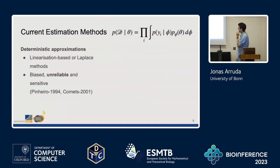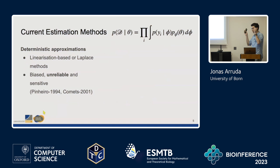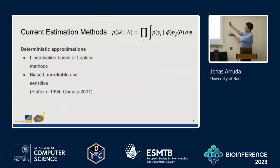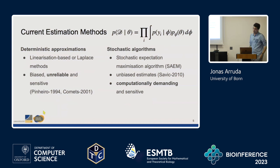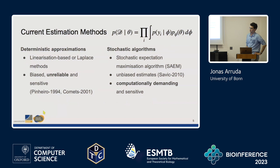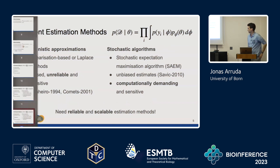What are current methods which can solve that product of integrals? There are deterministic approximations which look at the single individual, try to estimate the random effect, then do some linearization of the integral to solve the overall likelihood. The problem is that gives a really biased estimate — it's unreliable and sensitive to initialization. The second approach is stochastic algorithms. The state-of-the-art is the stochastic expectation maximization algorithm, which gives an unbiased estimate but is really computationally demanding. With thousands of individuals, it becomes infeasible. So there is a real need for reliable and scalable estimation methods.